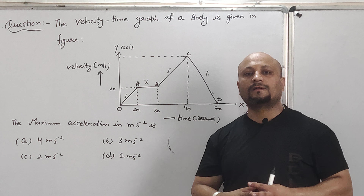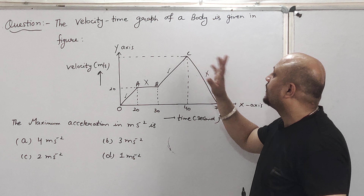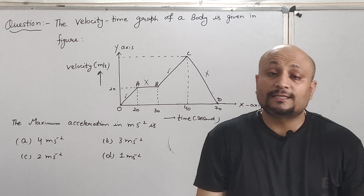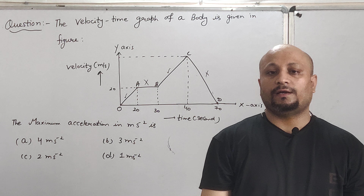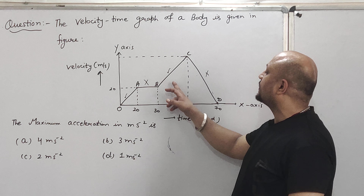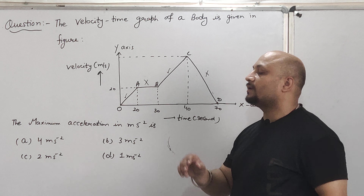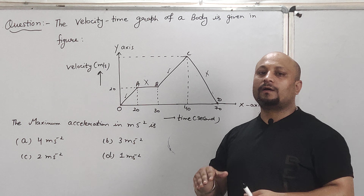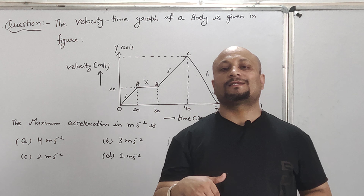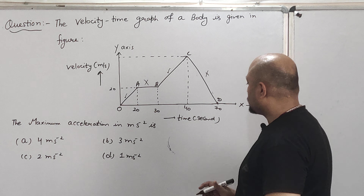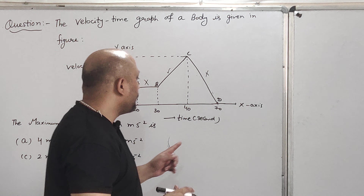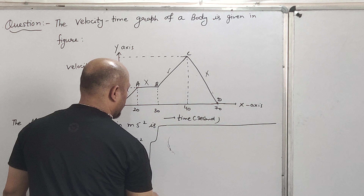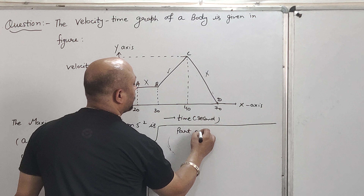So acceleration is only present in two parts: OA and BC. Now I will calculate the acceleration in each of these parts and then tell you which part has the maximum acceleration and how much it is.